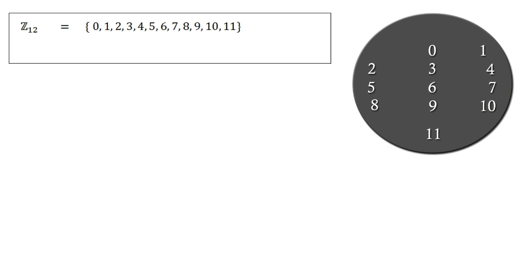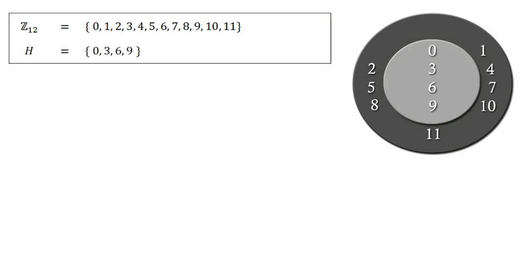Let's take the group of all integers modulo 12, Z12, and a subgroup H of Z12 containing 0, 3, 6, and 9. The group Z12 is a group under addition. The idea here is to take numbers from Z12 and add them to the subgroup H, continuing until we obtain all the elements in Z12.